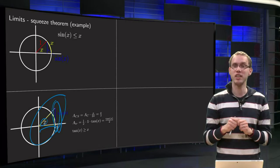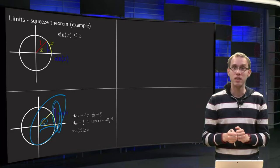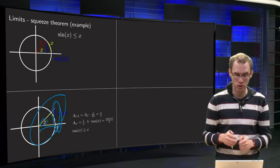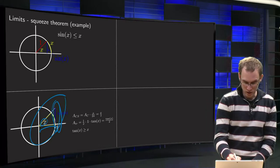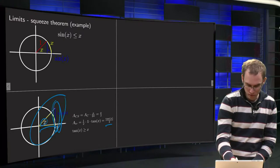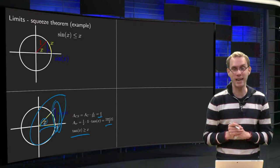So the area of the circular section equals x over 2. The area of the triangle equals the tangent of x over 2, while the triangle is of course bigger than the circle, so the tangent of x over 2 is bigger or equal than x over 2 or tangent of x is bigger or equal than x.